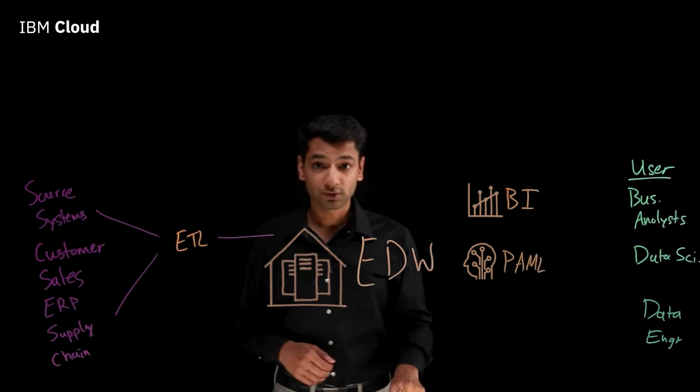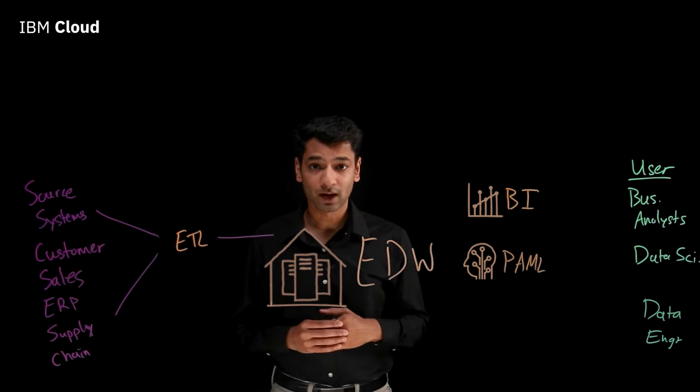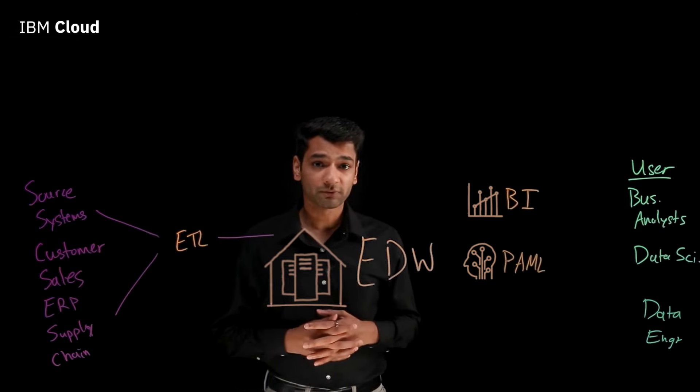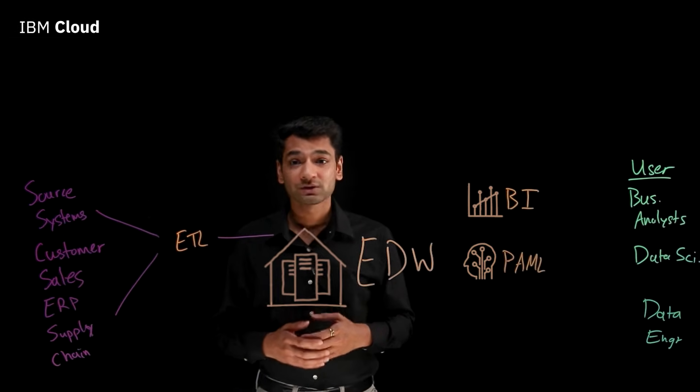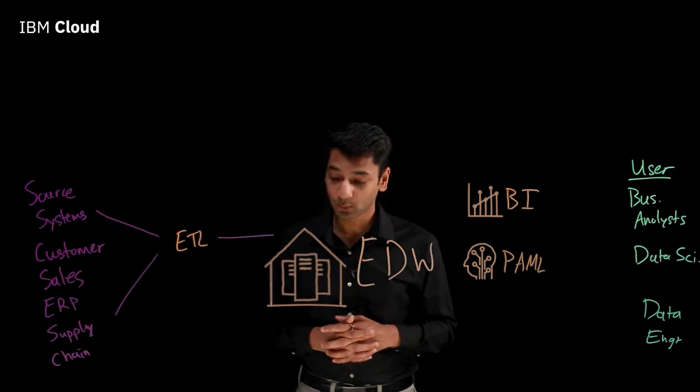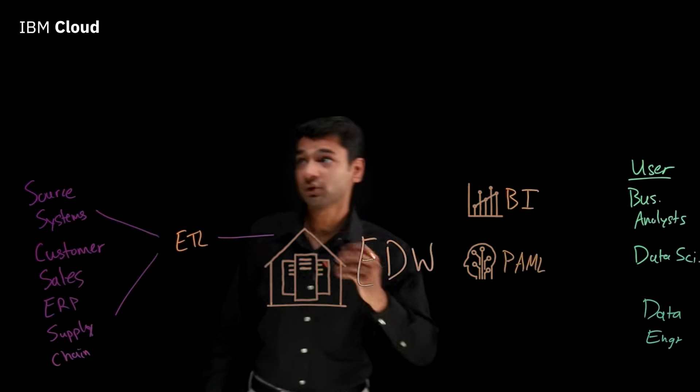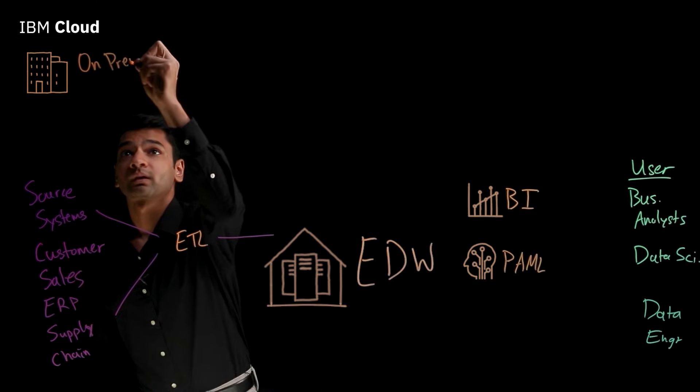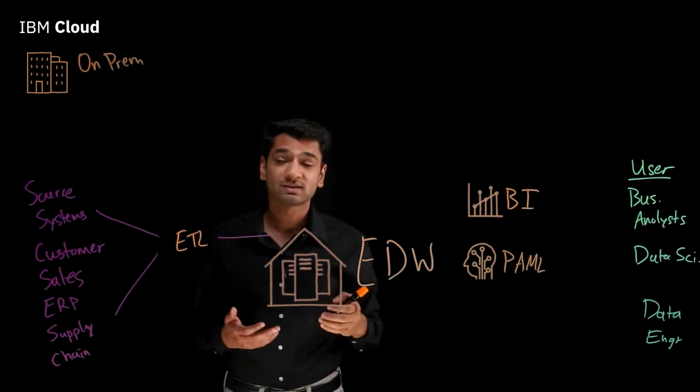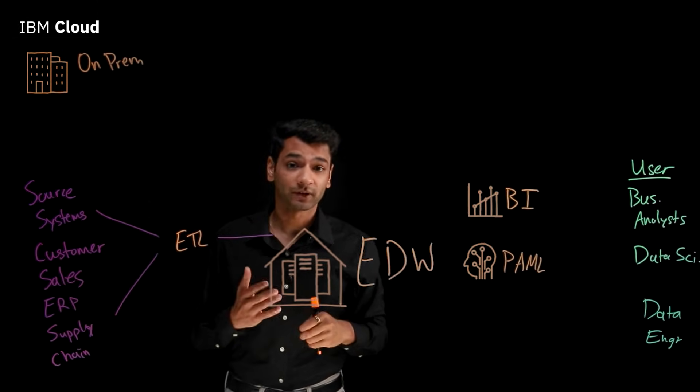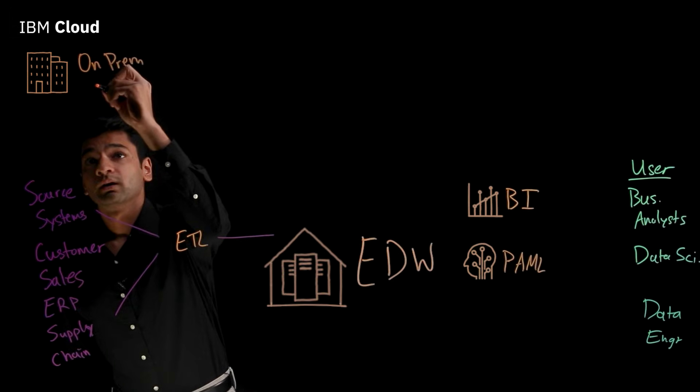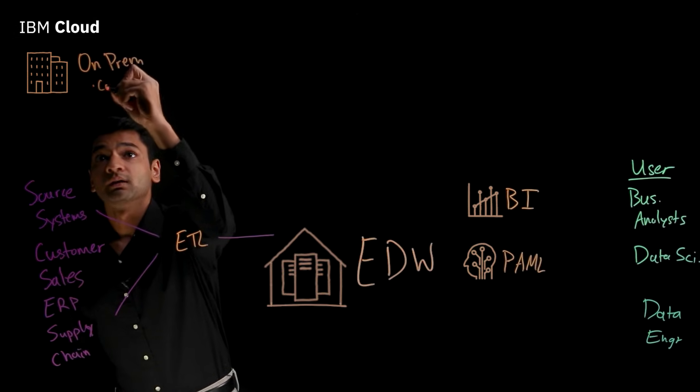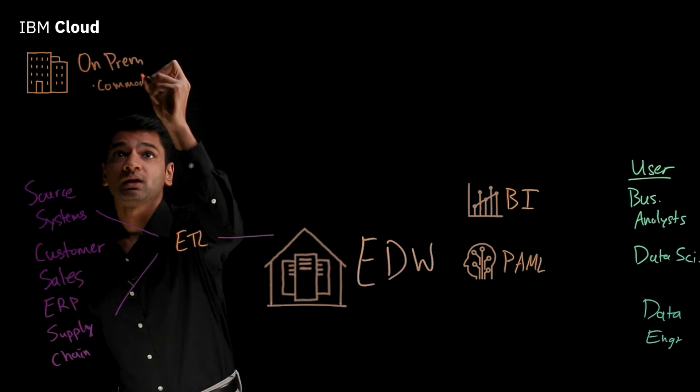Now that we know what an enterprise data warehouse is, let's talk about the different ways in which it can be implemented. Three common ways in which a data warehouse can be deployed. The first way is on-prem. There are a couple different ways in which an on-prem data warehouse can be configured.